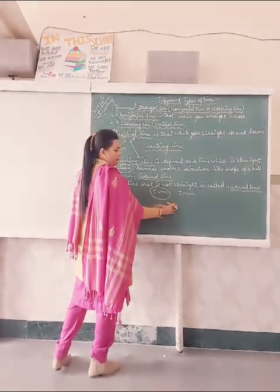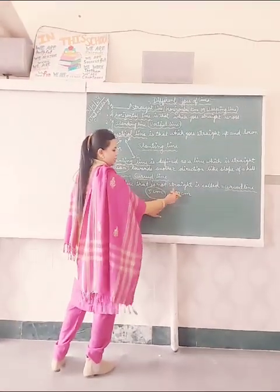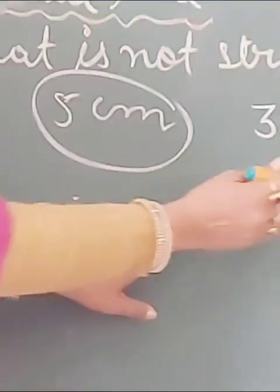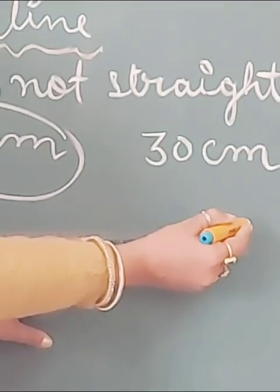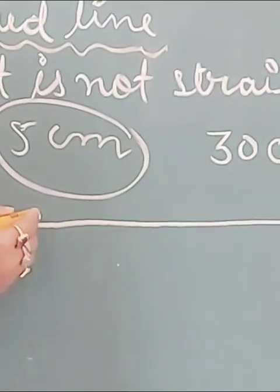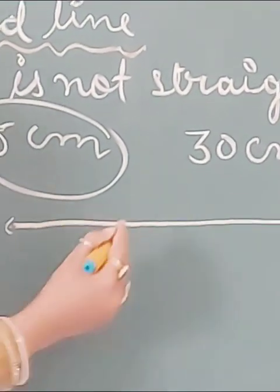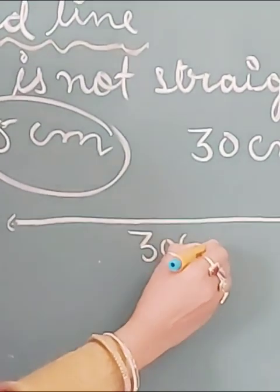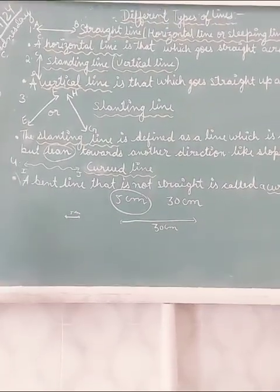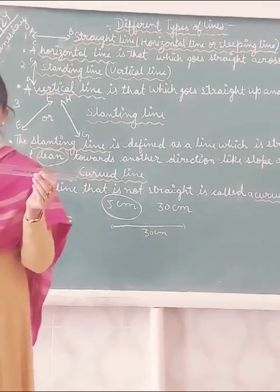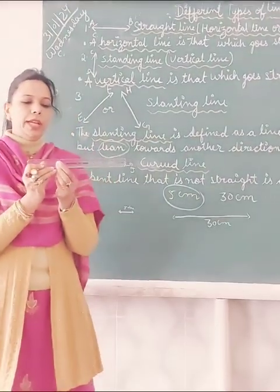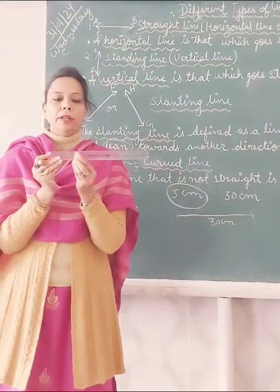Similarly, if you are going to draw a line which is 30 cm long, you will start from 0, place 0 at one end and mark 30 at the other, then make a straight line with the help of the ruler. This is how you draw a line with a ruler — start from 0 and go to whichever point you want, like 8 cm.